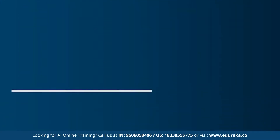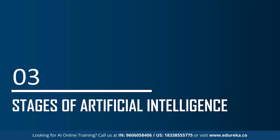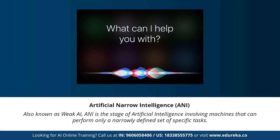Now let's understand the different stages of artificial intelligence. A lot of articles state that artificial general intelligence, artificial narrow intelligence, and artificial super intelligence are the different types of AI. To be more precise, these are actually the three different stages of AI — the types of AI are completely different from the stages. Under the stages of artificial intelligence, we have artificial narrow intelligence, artificial general intelligence, and artificial super intelligence.